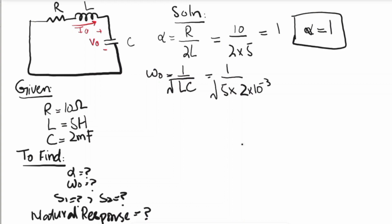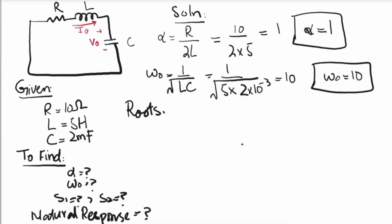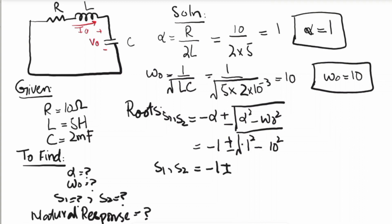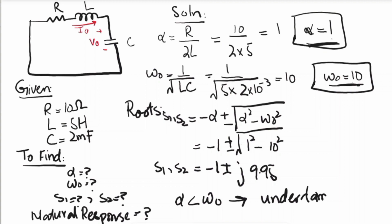The roots are s1, s2 = -α ± √(α² - ω₀²) = -1 ± √(1 - 100) = -1 ± j9.95. Since α (= 1) is less than ω₀ (= 10), the response is under-damped. Next, we will solve a more complex problem regarding this series source-free RLC circuit.